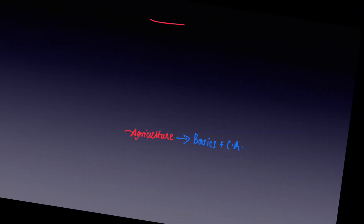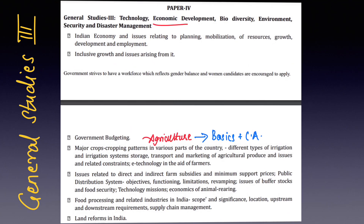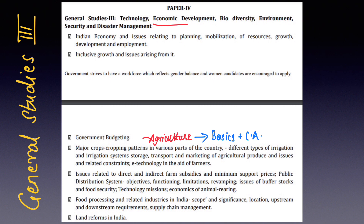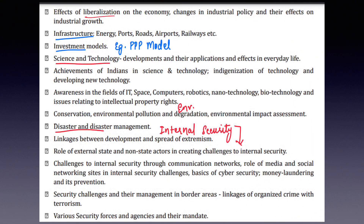For General Studies Paper 3, you need to prepare Science and Technology, Economics, Biodiversity, Environment, Security, and Disaster Management. However, preparation for all these topics will only be complete when basics and current affairs are integrated. This means for each topic, you must incorporate related current affairs news into your notes — otherwise preparation for this paper is incomplete. Questions in this paper ask basics in one part and current affairs in another. For example, on ports — first they'll ask about the importance of ports, then they'll ask about a new port from the news, its importance, and which two locations it connects. You need to mix both — that's why basics and current affairs must be prepared together very thoroughly.